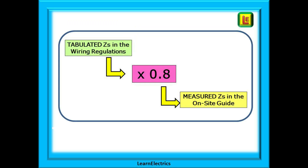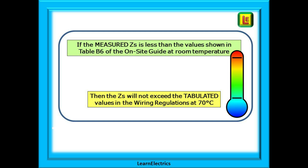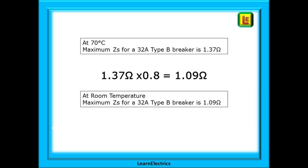If we take the tabulated ZS from the wiring regs book and multiply it by 0.8, we will arrive at the maximum measured ZS as found in the onsite guide. If the measured ZS — what we measure with our test meter — is less than the values shown in table B6 of the onsite guide at room temperature, then even at 70 degrees Celsius the ZS will not exceed the tabulated values. At 70 degrees, the maximum ZS for a 32 amp type B breaker is 1.37 ohms — we never want to exceed this. 1.37 multiplied by 0.8 gives us 1.09 ohms. When we measure ZS with a test meter at room temperature, if the value is less than 1.09 ohms then at 70 degrees it will not exceed 1.37 ohms.